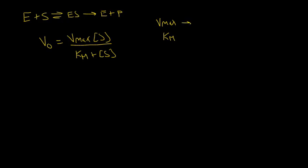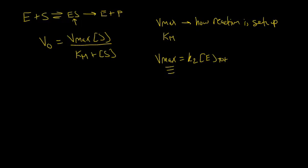This V_max value is really not very useful because it's dependent on how you set up the reaction. We define V_max as K2 times the total enzyme concentration, so this value of V_max depends on how much enzyme you use in your experiment. If another scientist were to do this same experiment they might come up with a different V_max, so V_max is not really useful to report. Instead, scientists have come up with a couple of other really useful values.